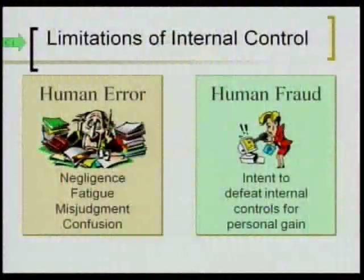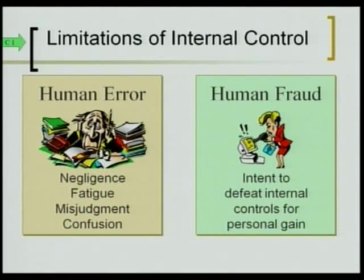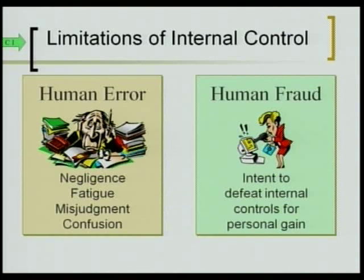There could also be situations of human fraud. You can divide up responsibilities and separate record keeping from custody of assets, but it is very difficult if two or three people collude to steal from you. If two or three people who work for you decide to steal together, that's very hard to prevent — they're checks and balances on each other, but if they all agree to steal, it's nearly impossible to stop.